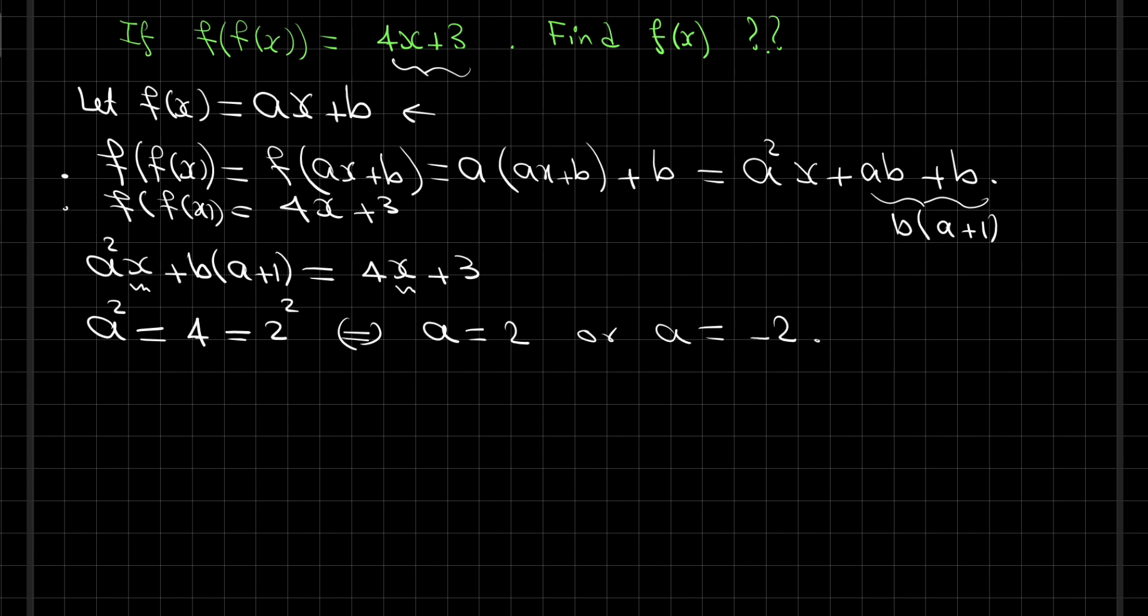For the constant, b multiplied by a plus 1 equals 3. Here we have two cases. Case 1: if a equals 2, this implies b times 2 plus 1 equals 3.